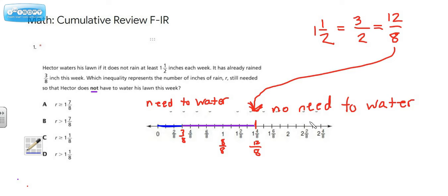That means that anything on this side, if it rains that much, there would be no need to water. But anything on this side of the number line, you would need to water.